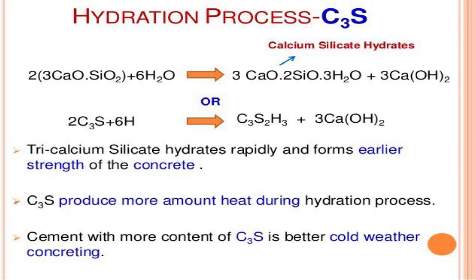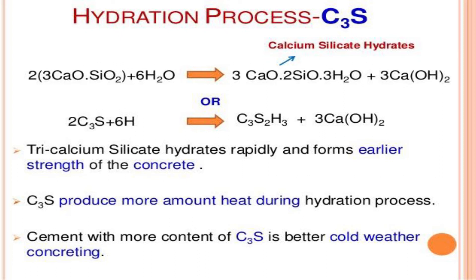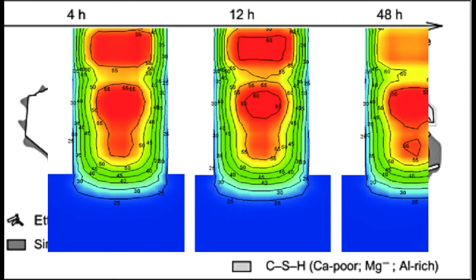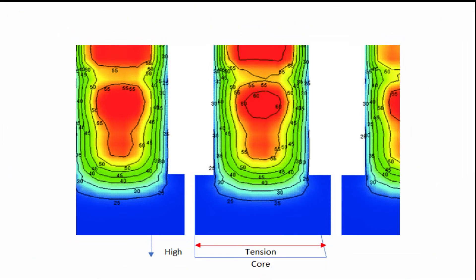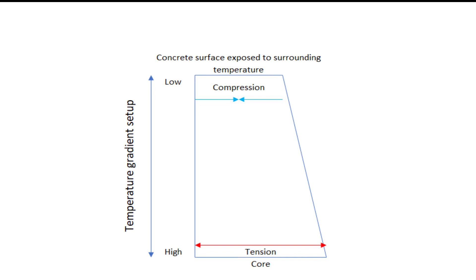The above discussed reaction keeps on taking place till all the free water present in the concrete matrix is utilized, giving rise to more heat evolution. Now, due to this exothermic reaction, the temperature of the concrete core is very high, but the surface temperature of concrete which is in contact with the atmosphere is comparatively low. Thus, this creates a temperature gradient with high temperature at the core and low temperature at the surface. Therefore, the concrete will try to expand at the core and contract at the surface.